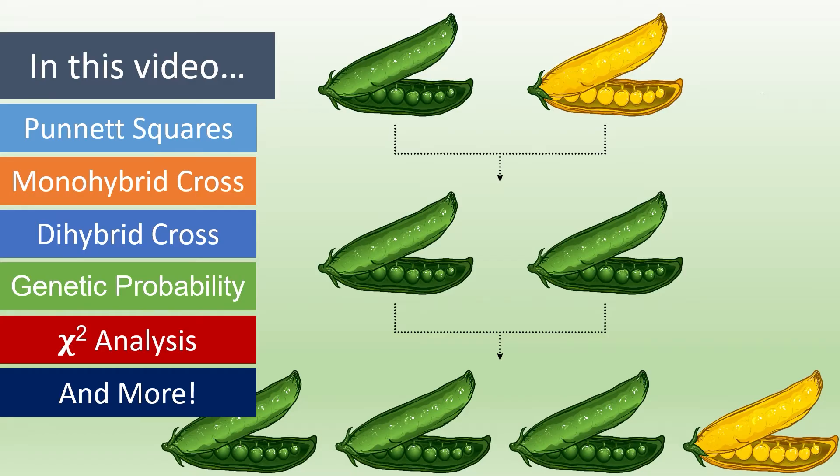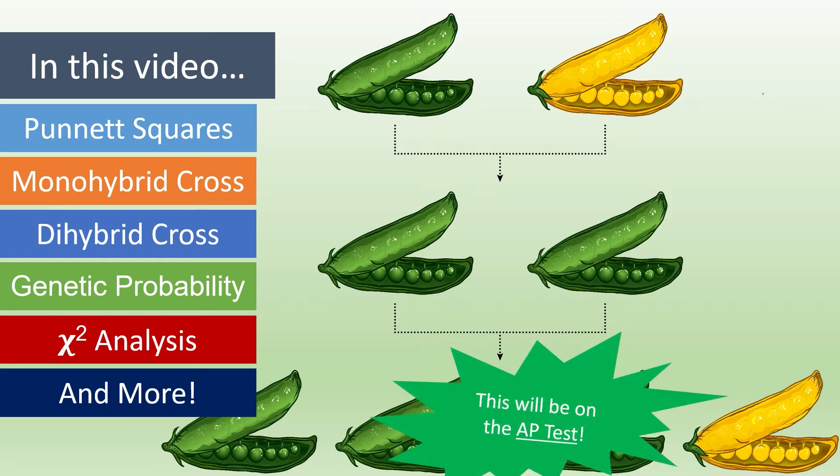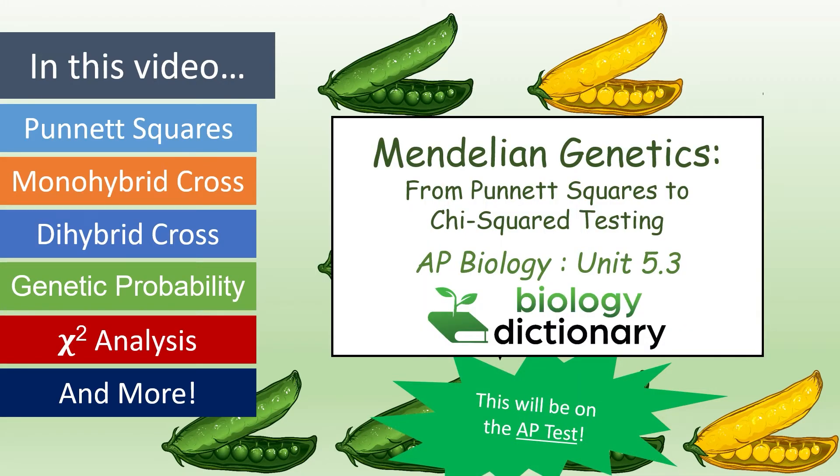Mendelian genetics and probability testing using chi-squared analyses will definitely be on the AP test. So, stick with us as we cover everything you need to know about Mendelian genetics.